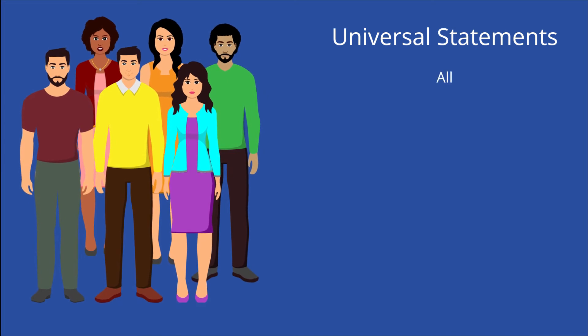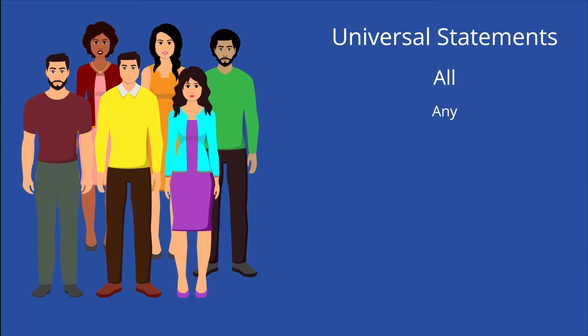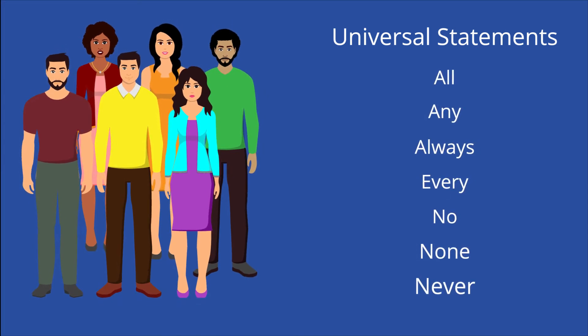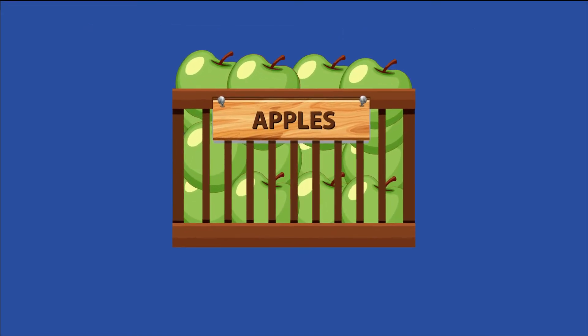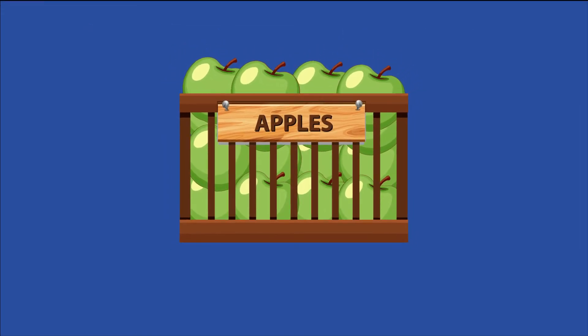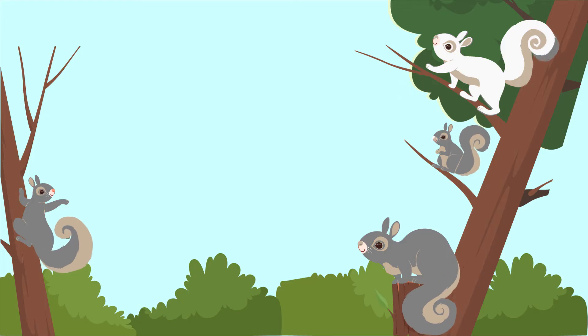All of these statements are universal because they take a group of things and attempt to apply a particular property to every single thing in that group. Universal statements can be identified by the words all, any, always, every, no, none, and never. Counter-examples are a way to disprove a universal statement. As long as the opposition can identify a single thing in that group that does not possess the stated property, then it is an exception to the rule.